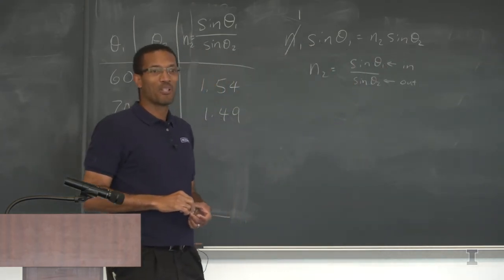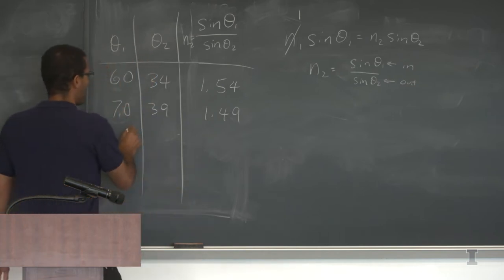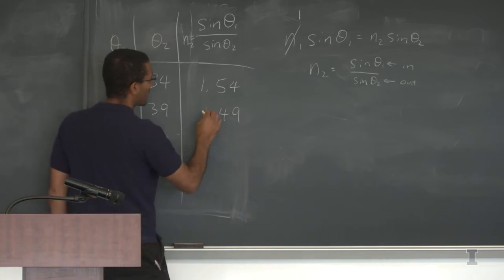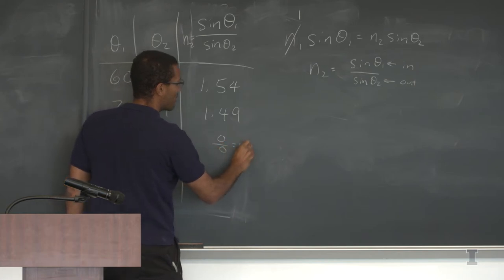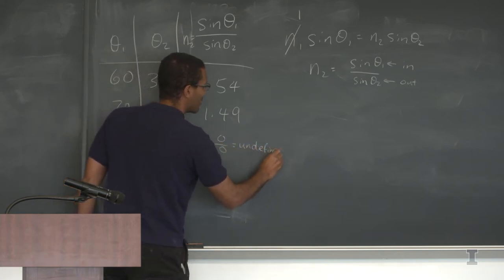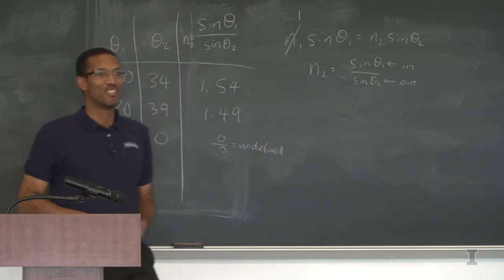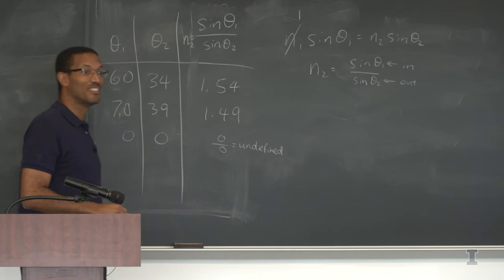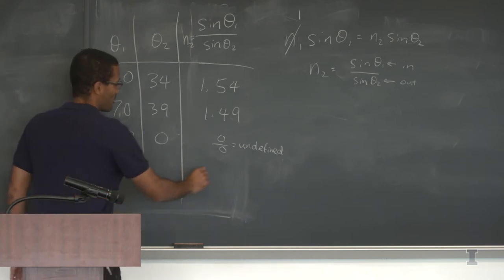Who else has a number to share? Someone got 0 and 0, which is correct, but you get sine of 0 divided by 0 — that's undefined. Another student got 1.859 using 15 degrees in and 8 degrees out.